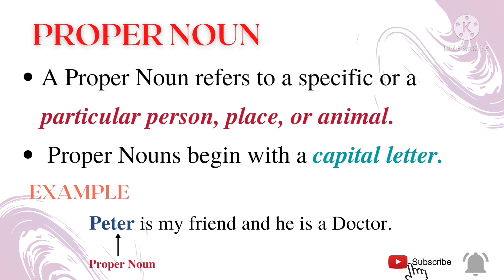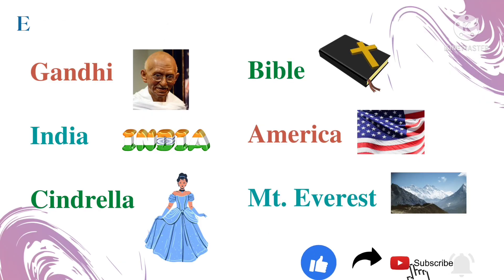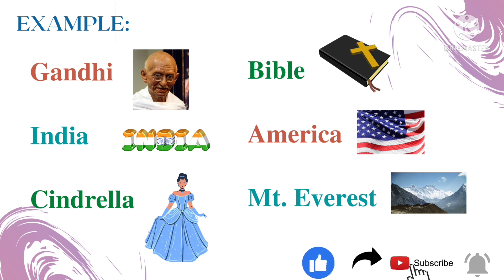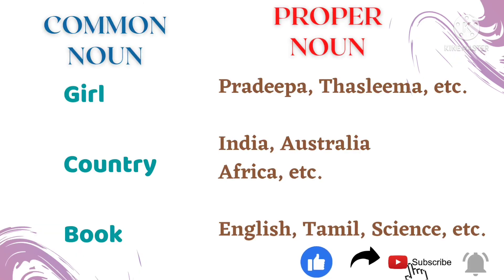A proper noun refers to a specific or particular person, place, or animal. Proper nouns begin with a capital letter. Example: 'Peter is my friend and he is a doctor' — here the subject Peter is the proper noun. Using proper nouns in your description makes information more specific. Examples include: Mahatma Gandhi, India, Cinderella, Bible, America, and Mount Everest.